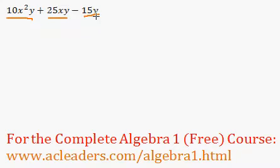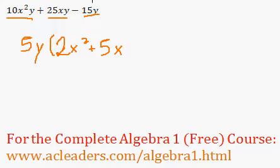The greatest common factor here will be 5y, and 10x squared divided by 5y is 2x squared, 25xy divided by 5y is 5x, and negative 15y divided by 5y is just negative 3.